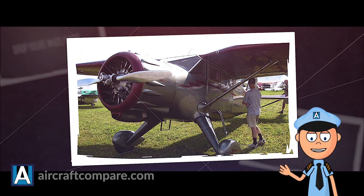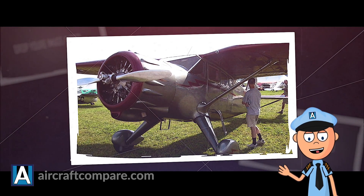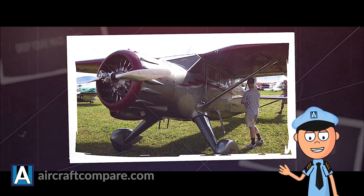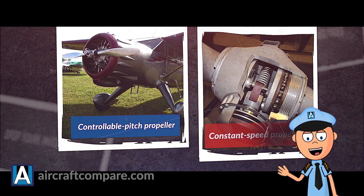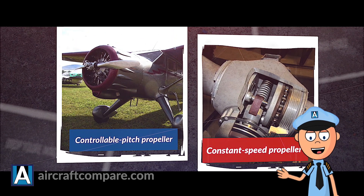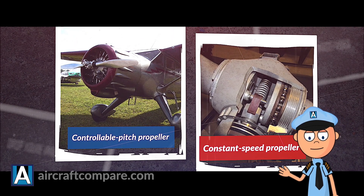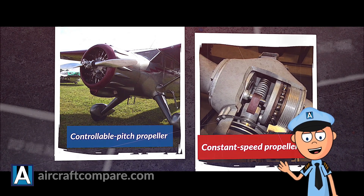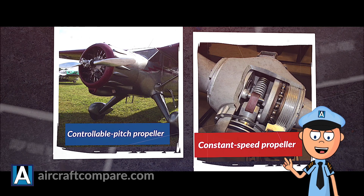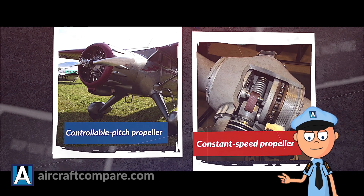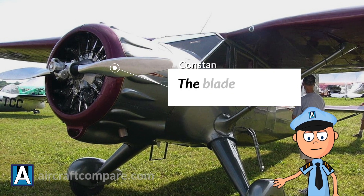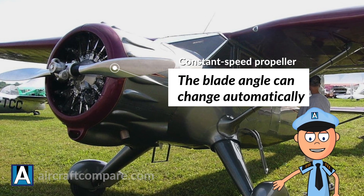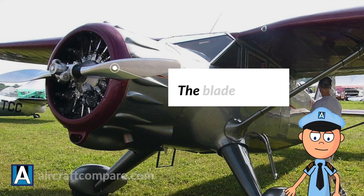It is easy to confuse controllable pitch propellers with a constant speed propeller, but the two are different. Controllable pitch propellers allow the blade angle to be changed while the propeller is turning; however, the propeller blade must be changed directly by the pilot. The blade angle of the propeller will not change until the pilot alters it. On the other hand, the blade angle of a constant speed propeller can change automatically.